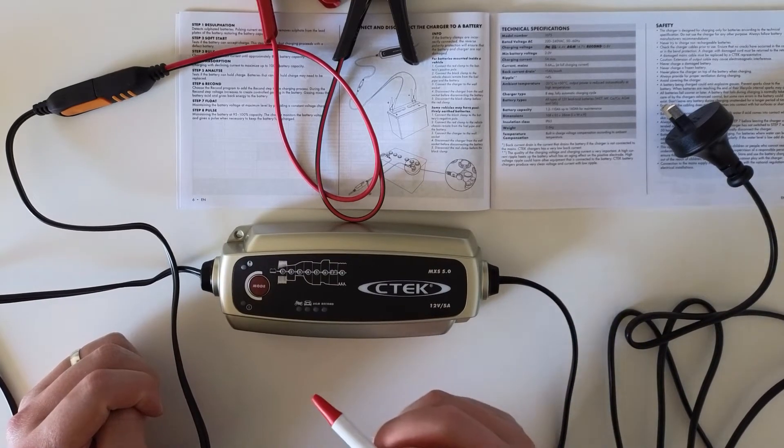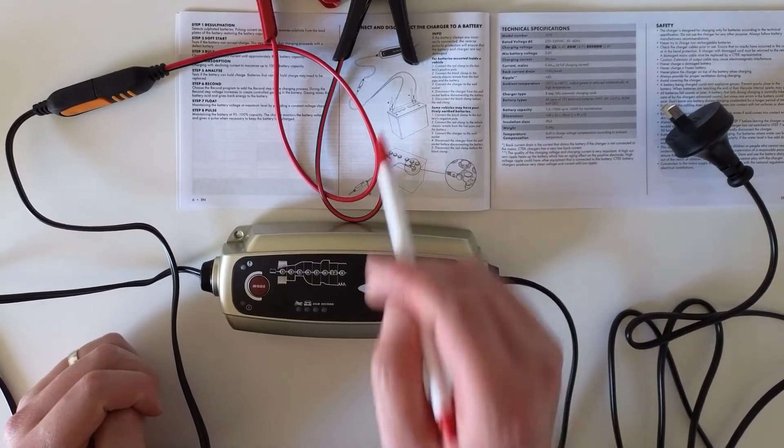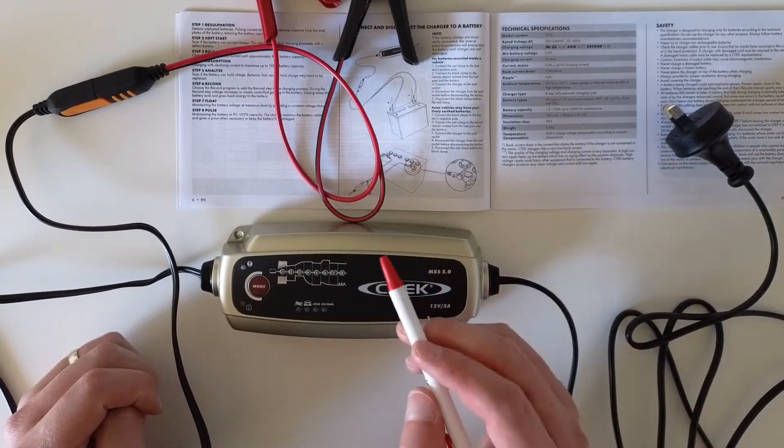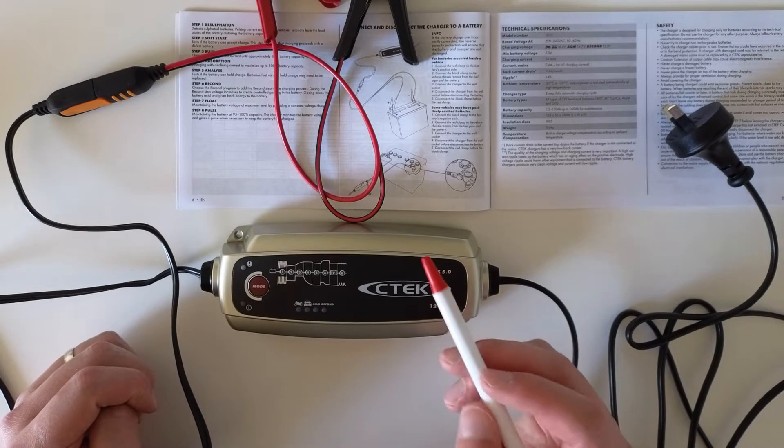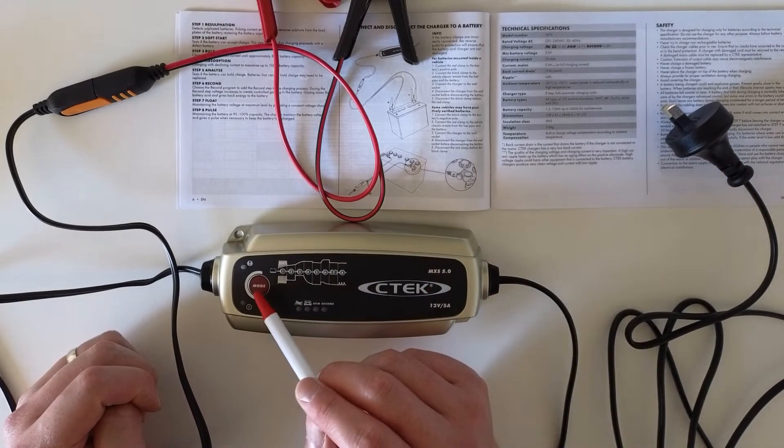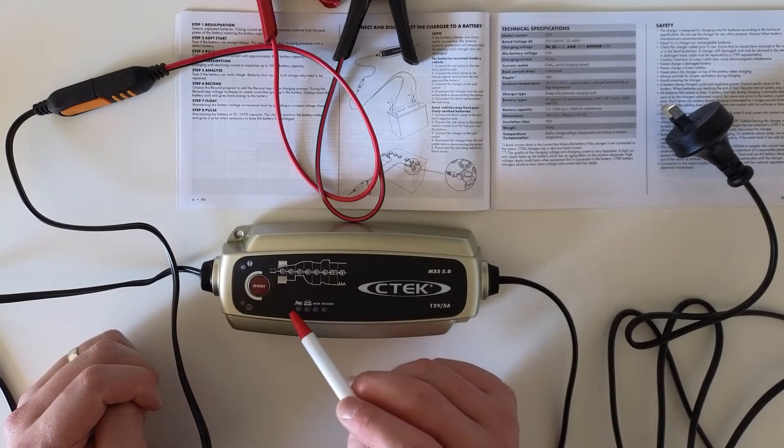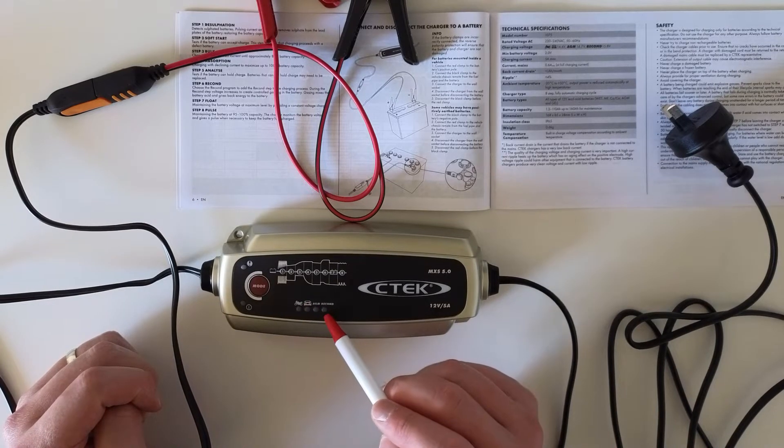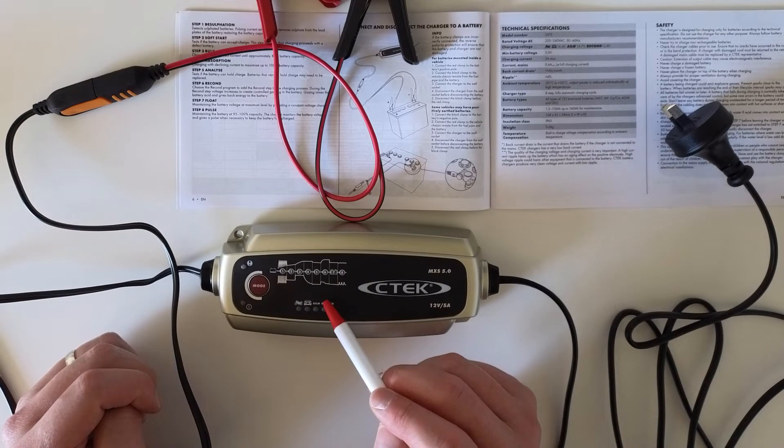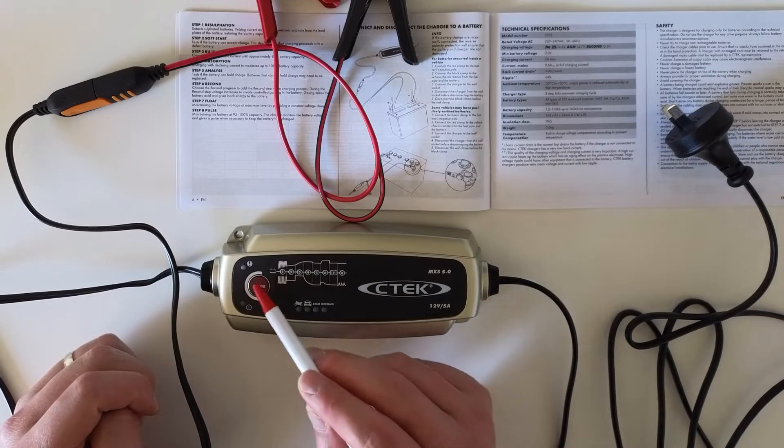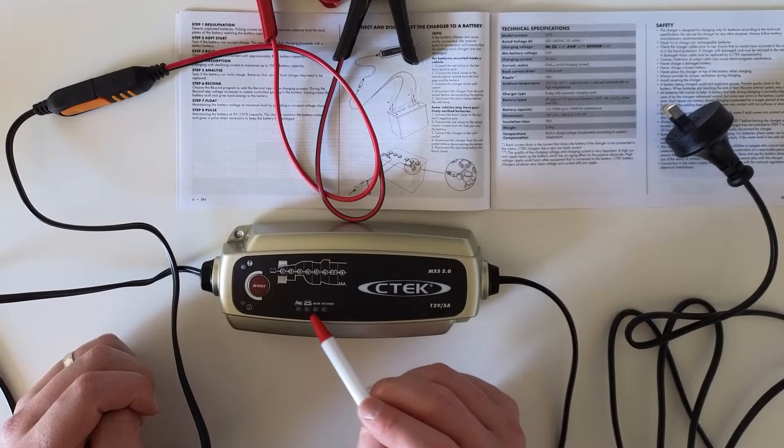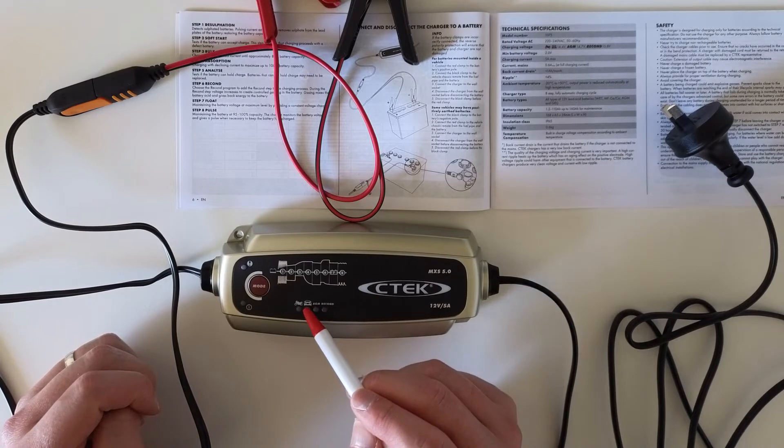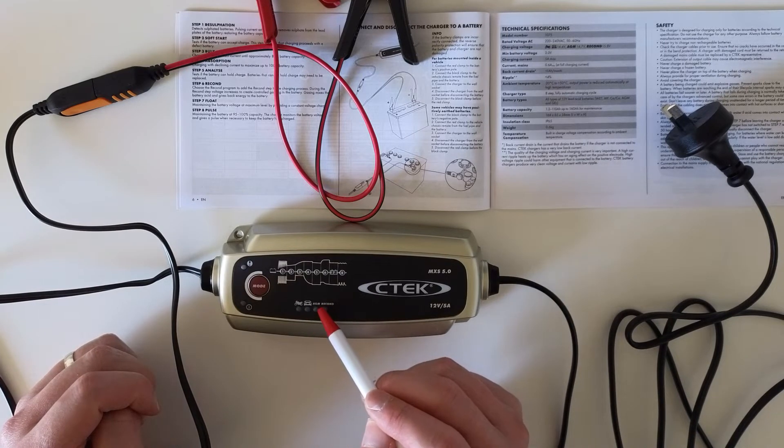What I did the second time is I connected everything again. Instead of using the default mode, I pressed the mode button and then I chose car and recondition mode. In that case, you would light up this LED, that's the car and recondition.